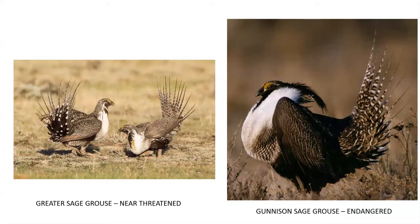Sagebrush is an important food source for several important wildlife species, some of whom are endangered. Here is the greater sage grouse, shown on the left, which is near threatened — its population is declining. On the right is the Gunnison sage grouse, which is endangered and its population is also declining.